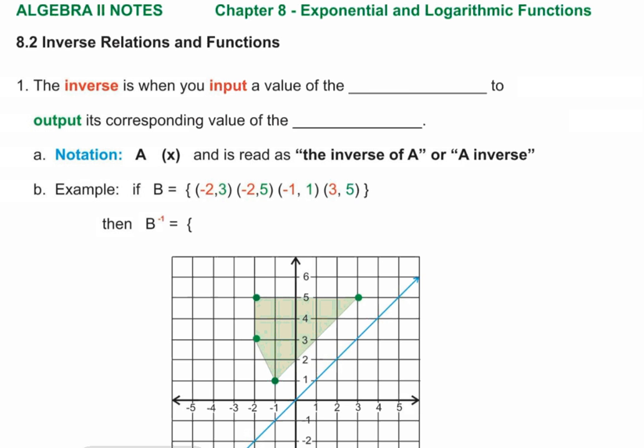Normal procedure for a function, you determine the input, the independent variable value, and you find the output. You put in the x, the function tells you the value of the y. For an inverse, we're going to go backwards. You input the output and output the input. Everything's reversed. The whole world is upside down.